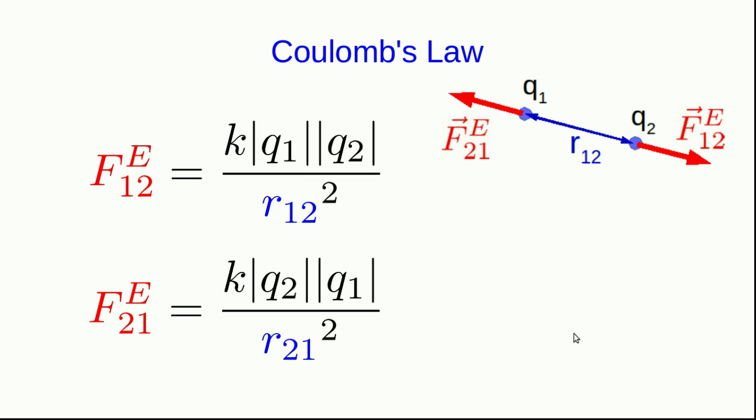Also notice that if the force that 1 exerts on 2 is given by the relationship I wrote above, then below we can write the force that 2 exerts on 1. It's just k q2 q1 over r21 squared. Well, r21 is just the distance between q2 and q1, and that's the same as the distance between 1 and 2 by definition, and reversing the order of q1 and q2 in the numerator won't change the answer, and so clearly this is saying that the force that 2 exerts on 1 is equal in magnitude to the force that 1 exerts on 2.